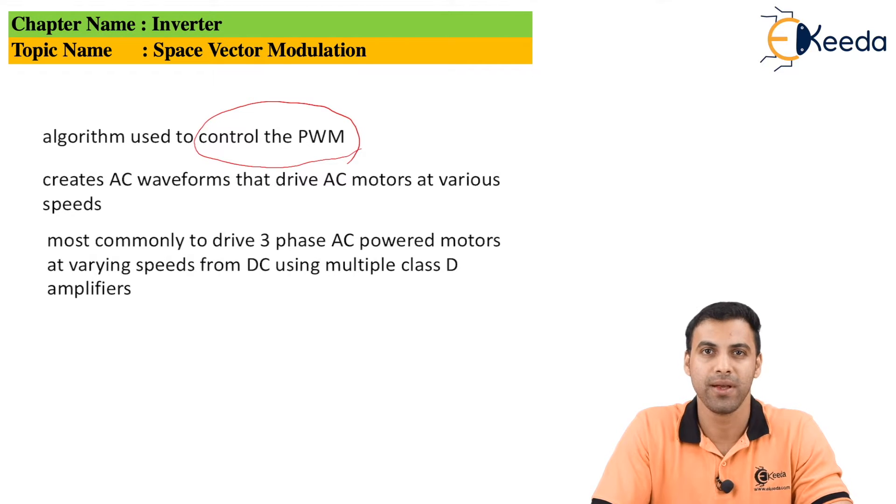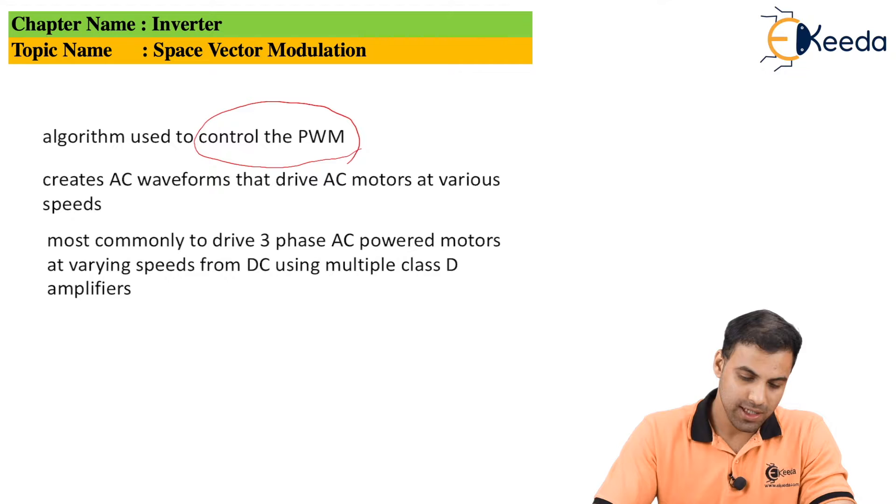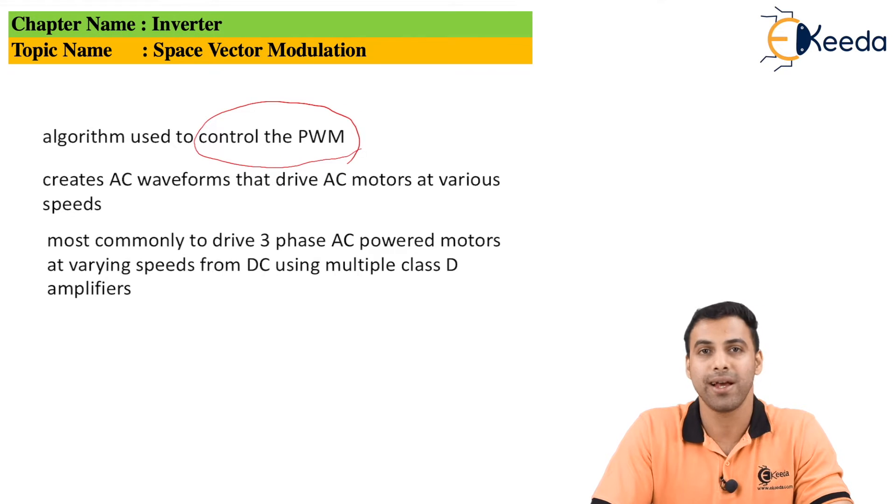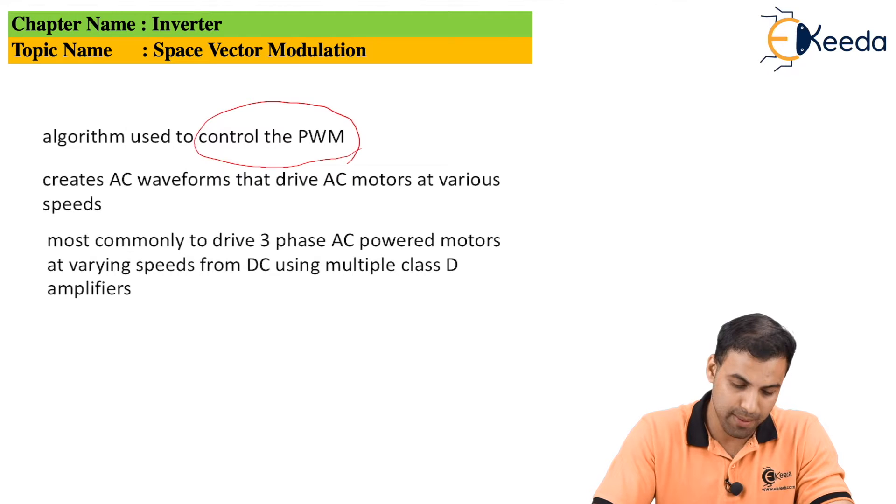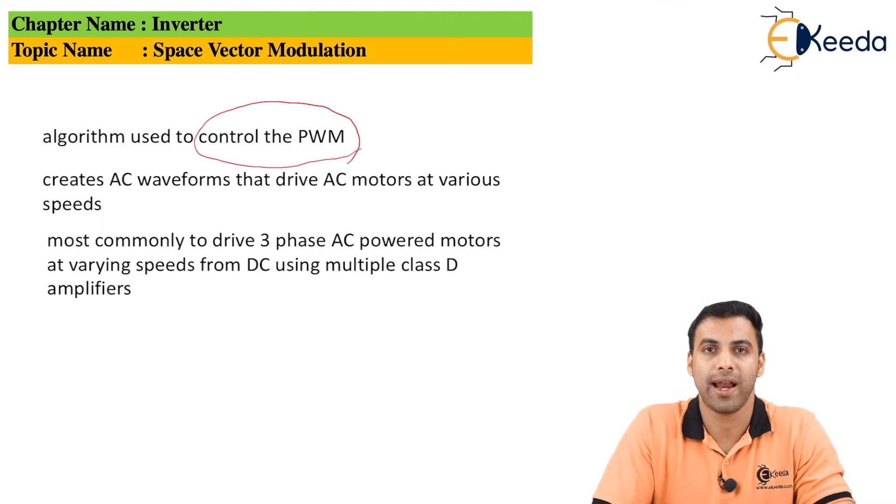Space vector modulation is basically an algorithm used to control the PWM pulse. It creates AC waveforms that drive AC motors at various speeds. When an algorithm is created by space vector modulation, it can create a PWM signal that drives an AC motor and can also drive three-phase AC power motors.